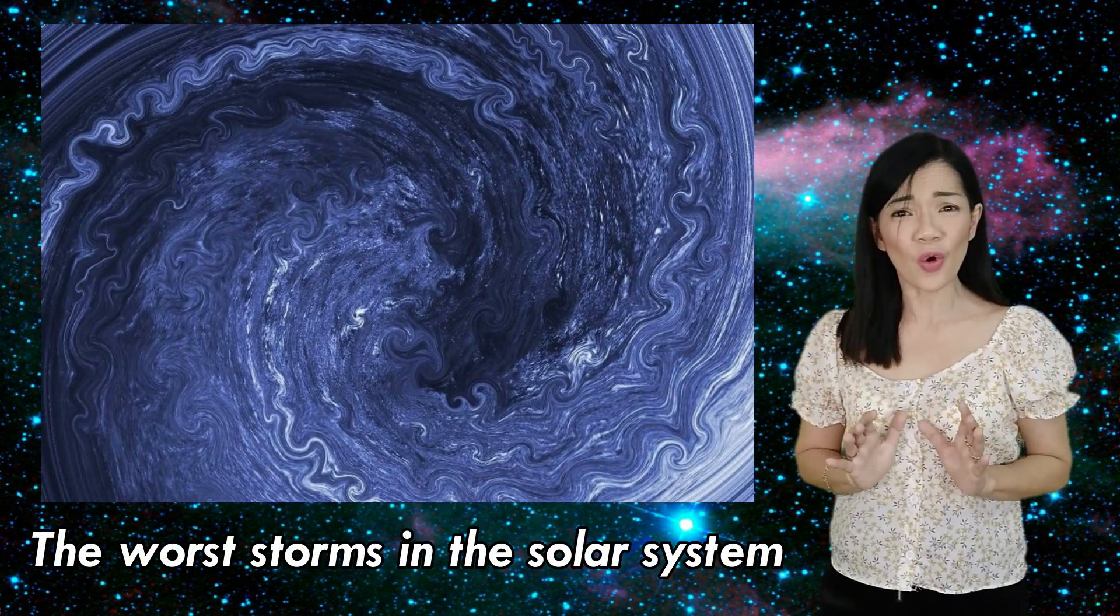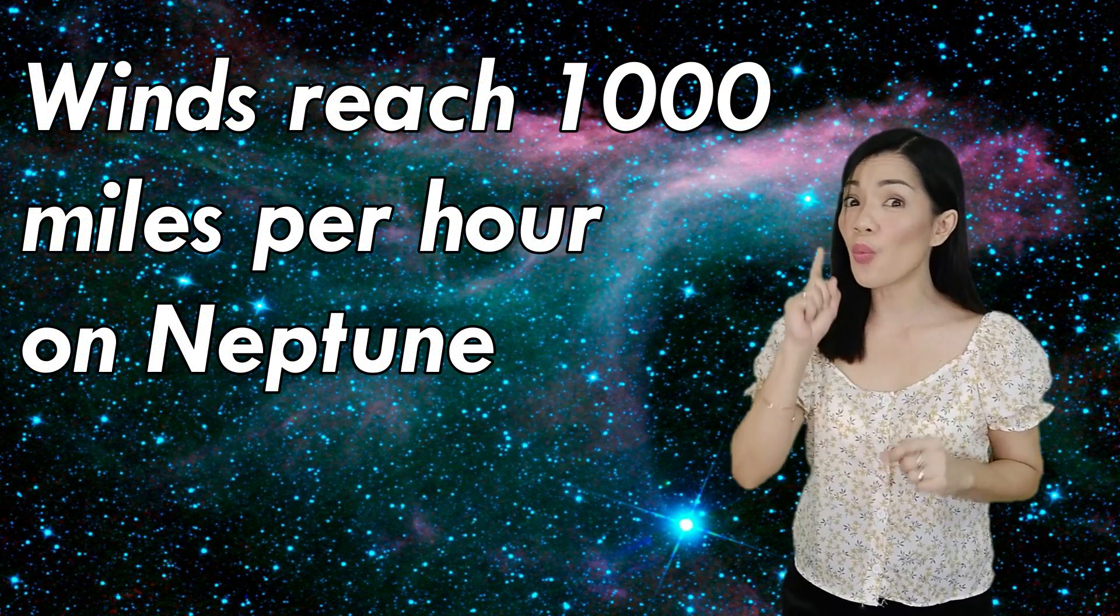Neptune is known for its storms. The worst storms in the solar system. In fact, winds reach 1,000 miles per hour on Neptune. That's pretty intense, yeah?